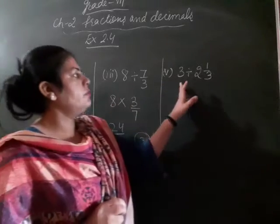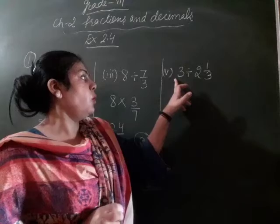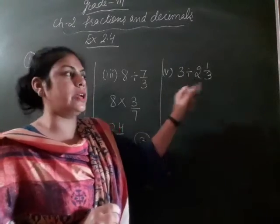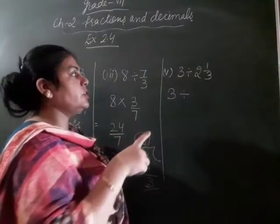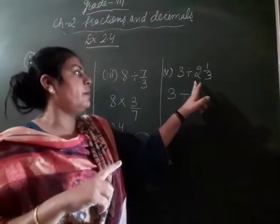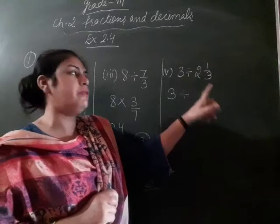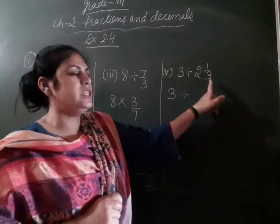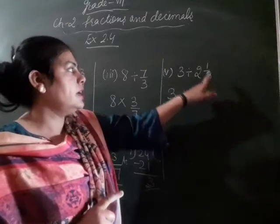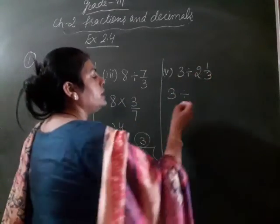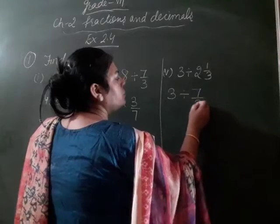Now you have mixed fraction. Whole number divided by mixed fraction. So your first step is you have to convert mixed fraction into the improper fraction. So mixed fraction co improper fraction may, whole number multiplied to the denominator. 2 threes are 6. Then add remainder. 6 plus 1, that is 7 by 3.